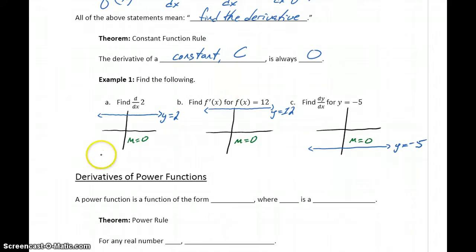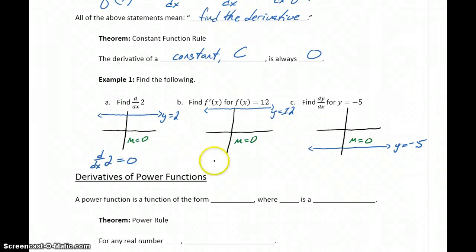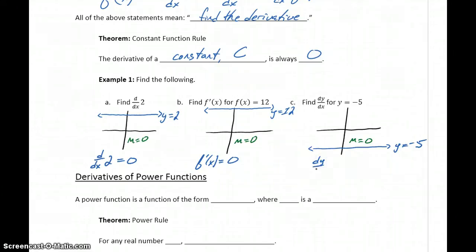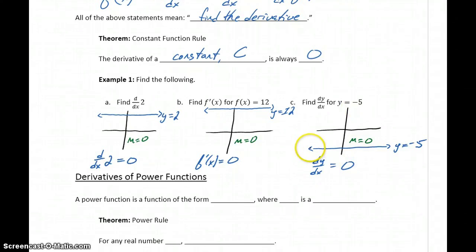The derivative function tells us about the rate of change. So the derivative of the function 2 is just going to be 0, because the rate of change is always 0. Similarly, f prime of x, which is the derivative of 12, will also be 0, since that rate of change is still 0. And dy over dx, which means take the derivative of y equals negative 5, will also be 0. So any time we have a constant function, that's basically a horizontal line which has a slope of 0, meaning the derivative is automatically 0.